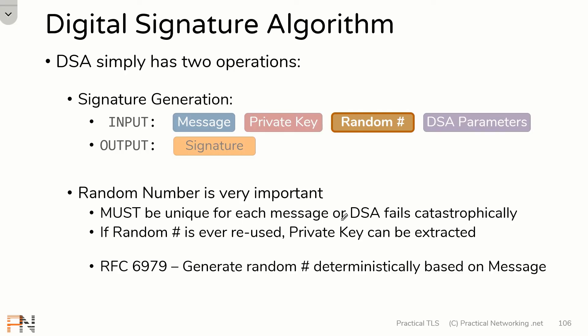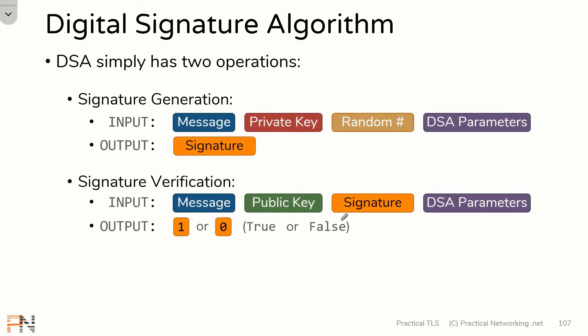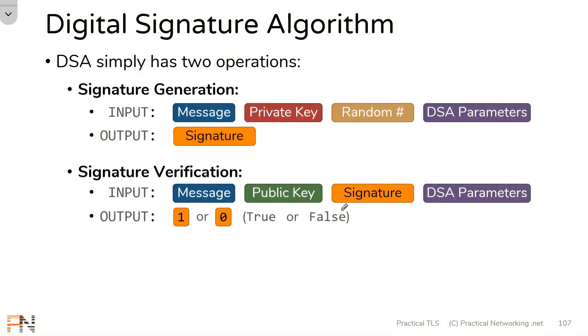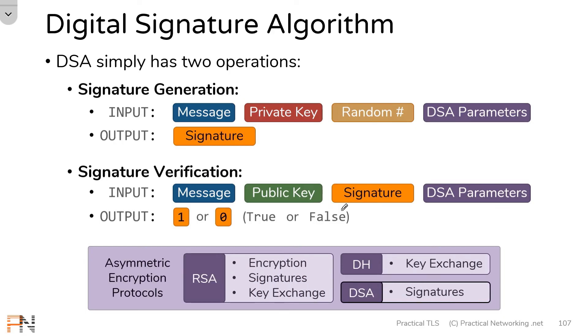So that's the digital signature algorithm. We're not going to go through the math for DSA — the math is actually quite complicated, more so than Diffie-Hellman and RSA. The main things to understand are that DSA is an asymmetric encryption protocol that can only be used for signature generation and signature verification, and how it differs from the other asymmetric encryption protocols we've discussed.